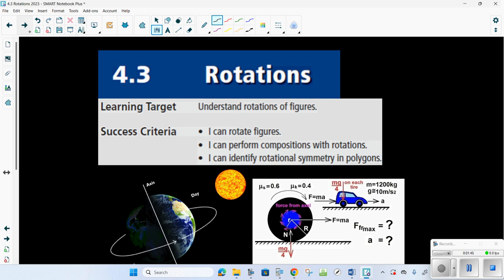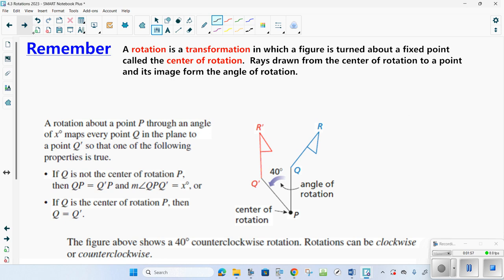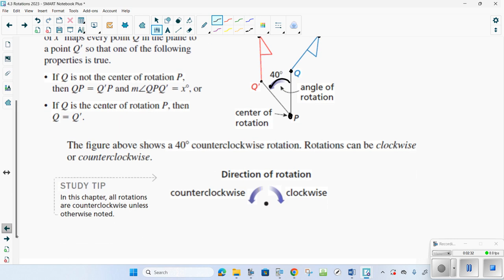Today we're going to talk about rotations. Rotation is another rigid motion, because ultimately you are not changing the shape, you're merely rotating it around a fixed point. A rotation is a transformation in which the figure is turned about a fixed point. This fixed point is called the center of rotation. Rays drawn from the center of rotation to a point and its image form an angle of rotation. For our purposes in this class, we are always going to do counterclockwise. So going around counterclockwise.